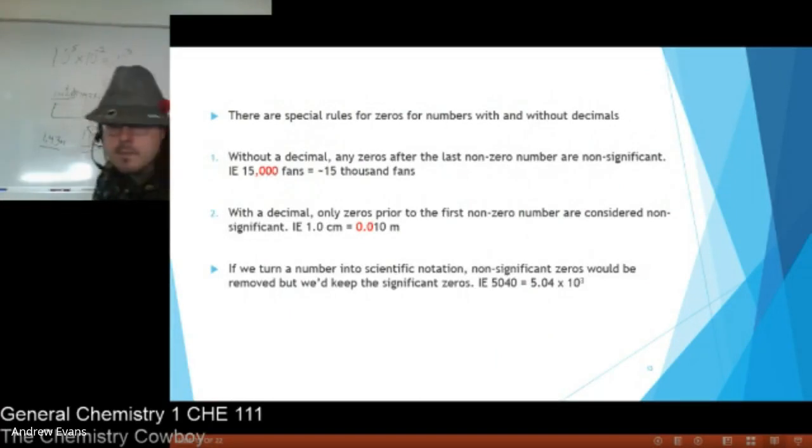Now when we turn these numbers into scientific notation, the non-significant zeros would be removed and we keep only the significant zeros. So 5,040, we keep 504 times 10 to the third. We lose that last non-significant zero. And one other thing about significance, we'll probably talk about this again next class, but when you're measuring something, when you're using a ruler, measuring with a ruler, we look to the last marking when we measure this. We look one marking past the last.